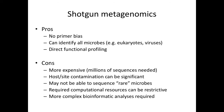Shotgun metagenomics doesn't have this primer bias. It allows you to identify all microbes present — if you're interested in viruses and eukaryotes, you'll get that information along with bacterial data. It allows direct functional profiling, since if you have a read mapping to a gene, you can get a confidence value on how likely it is that a homolog is present. The downside is it's a lot more expensive — typically needing something like 15 million reads rather than 50,000 for one 16S sample.